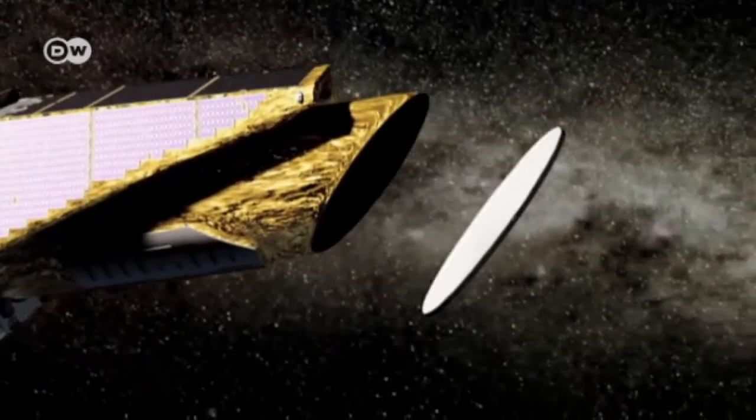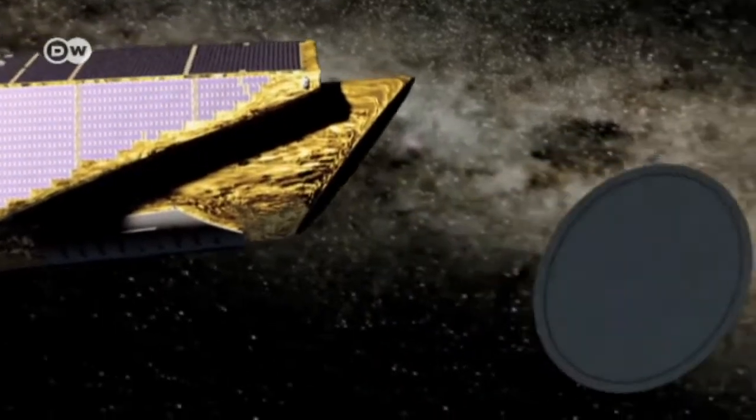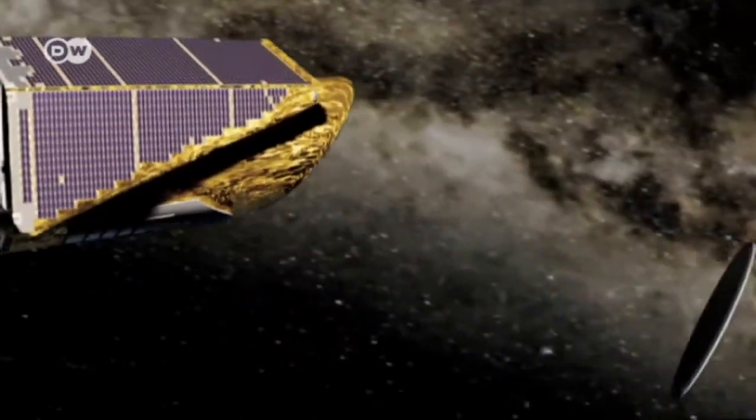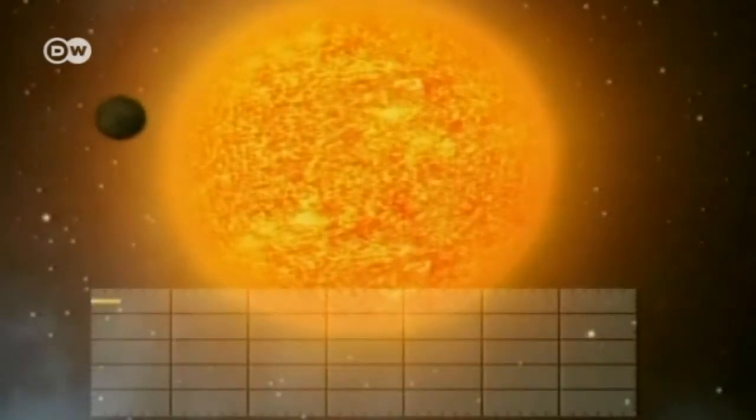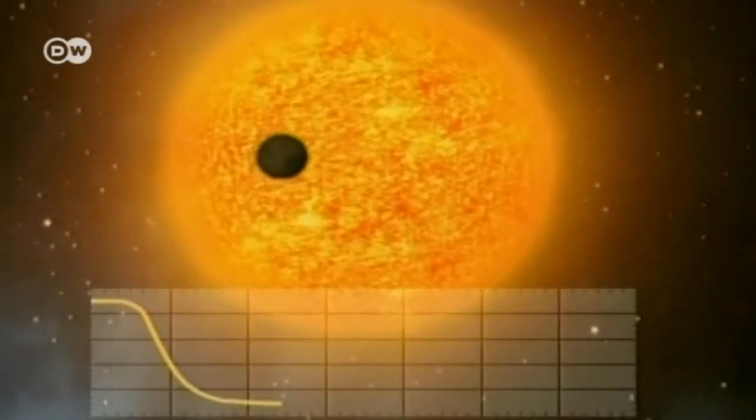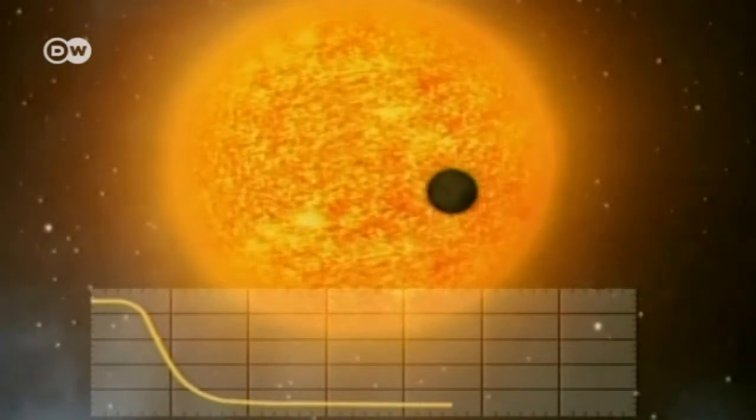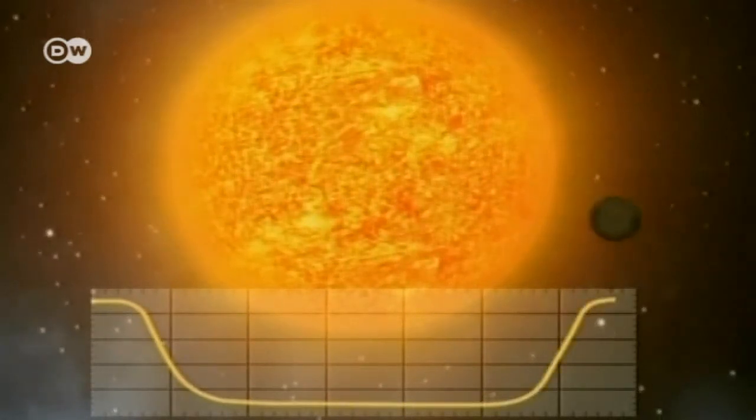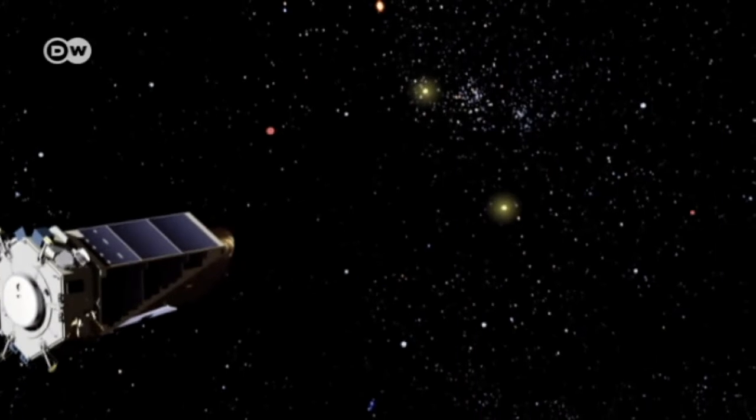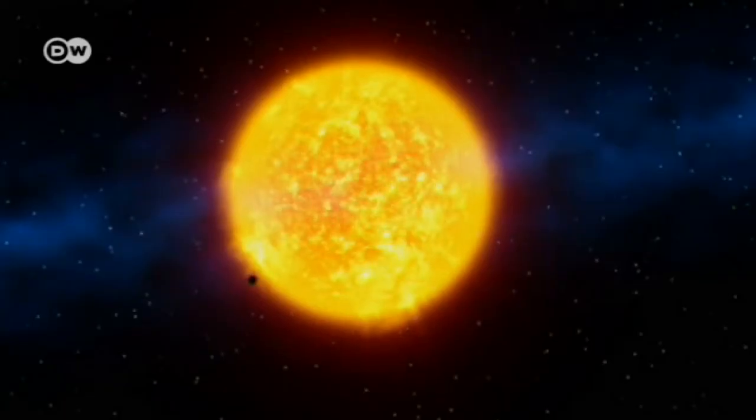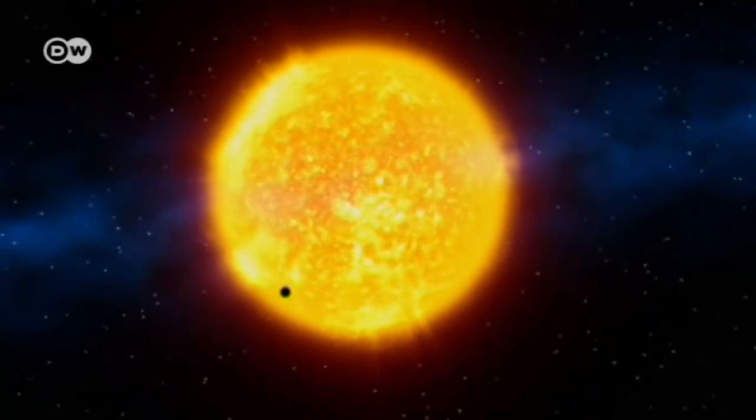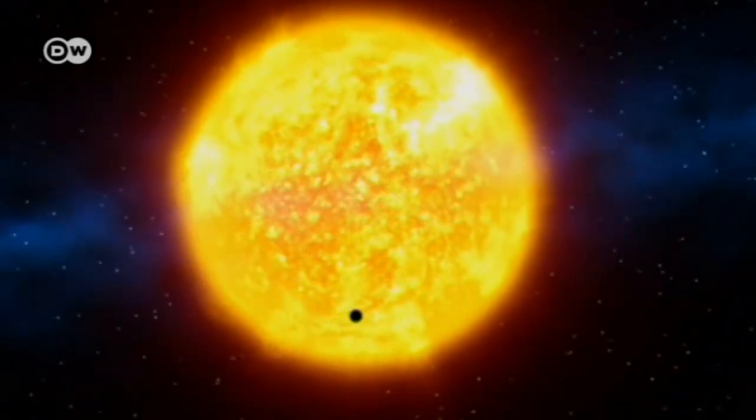Kepler is equipped with a main mirror about a meter and a half in diameter. Its mission is to track down habitable planets by studying the stars. If a planet passes in front of its star, the light of the star is dimmed ever so slightly. The satellite has to detect the tiniest fluctuations in the star's light to discover the planet. If the Earth passes in front of the Sun, for example, the Sun's light decreases by just 0.01 percent.